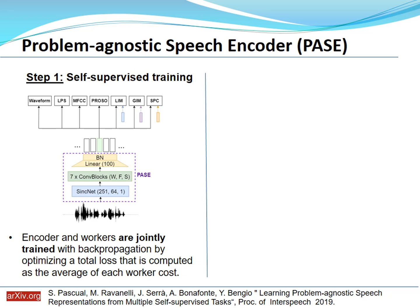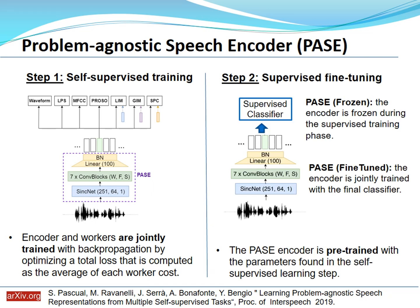In PACE, two phases are involved. Step one is self-supervised training, where the encoder and self-supervised workers are jointly trained by optimizing a loss computed as the average of each worker's cost — using only self-supervised labels. Step two is supervised learning, where the PACE encoder is pre-trained with parameters from step one, and a classifier is trained on top of it to solve a downstream task such as speech recognition.